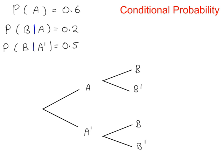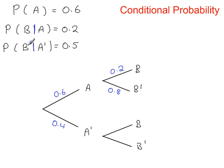The probability that A happens is 0.6, which means A' must be 0.4 — they add up to 1. The probability B happens given that A has already happened is 0.2, which means B' given A must be 0.8. The probability that B happens given that A did not happen is 0.5, so B' given A' is also 0.5. You now have a probability tree with all probabilities marked, which you can use to solve more complex problems.